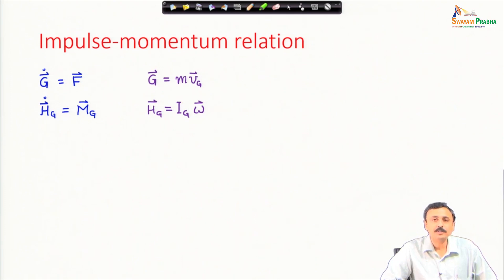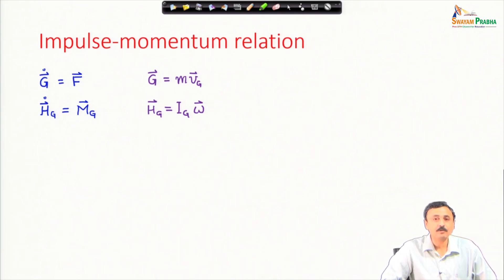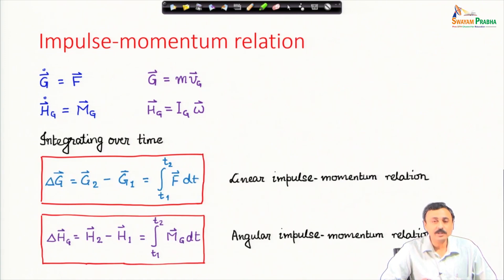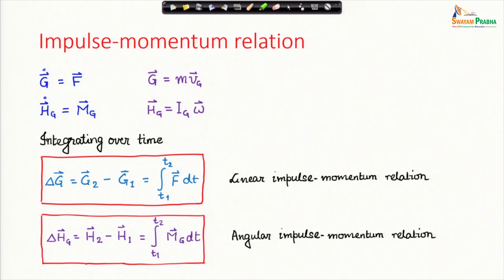We started off with the equations of motion for planar kinetics: the linear momentum equation, which is Newton's second law for the center of mass, and the angular momentum equation about the center of mass. We integrated them over time and obtained the linear impulse momentum relation and the angular impulse momentum relation. If the linear impulse on the right hand side is 0, then linear momentum of the center of mass is conserved.